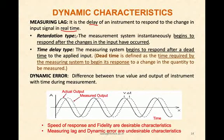We have two kinds of lag typically represented. One is the retardation type of lag, where the measurement system instantaneously begins to respond only after the change in the instrument has occurred. Another is the time delay type of lag where the measuring system begins to respond after a dead time to the applied input. Dead time is the time required by the instrument to begin its response to a change in the quantity to be measured.